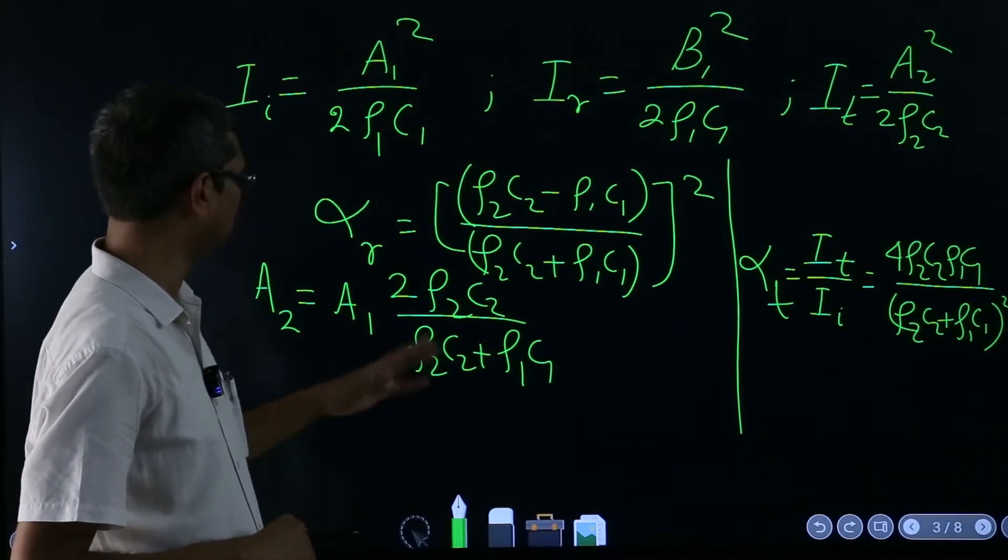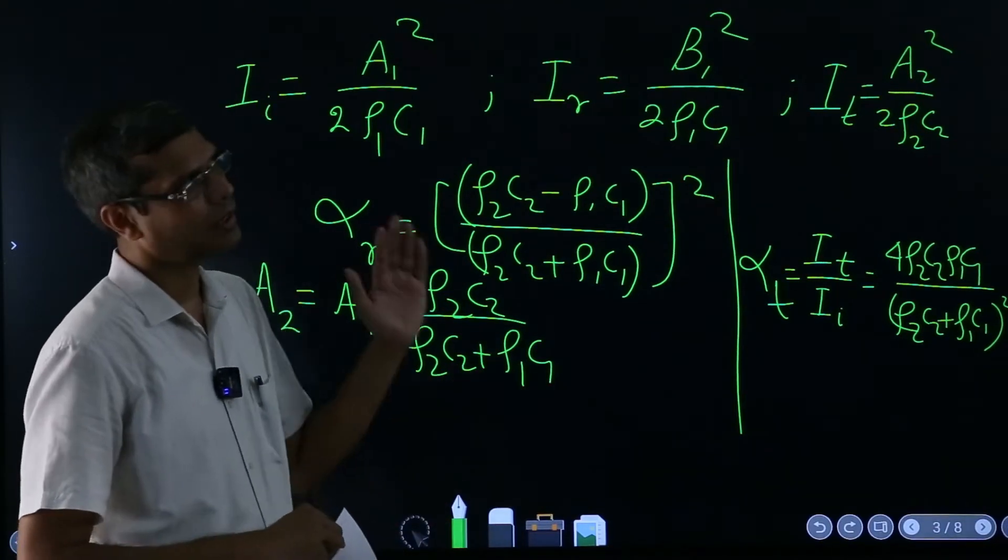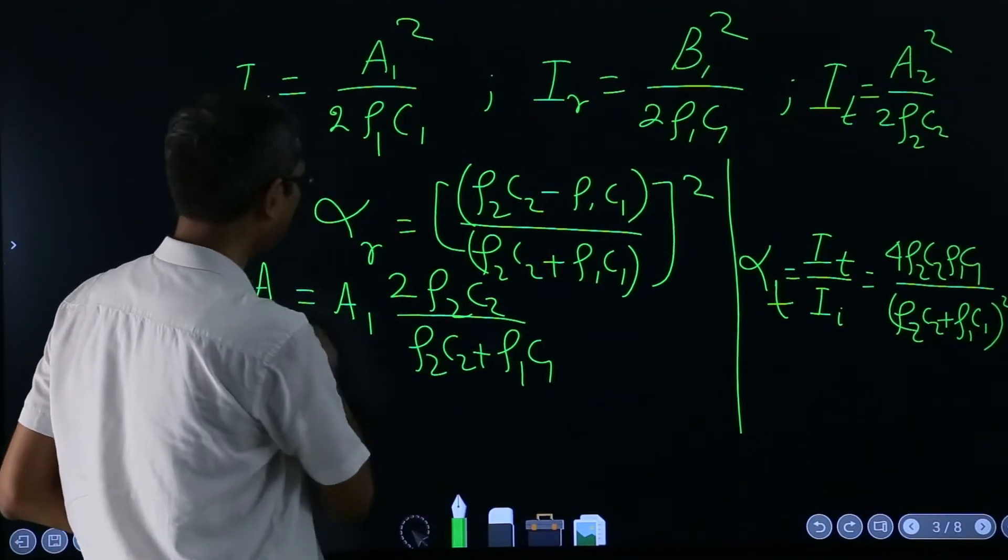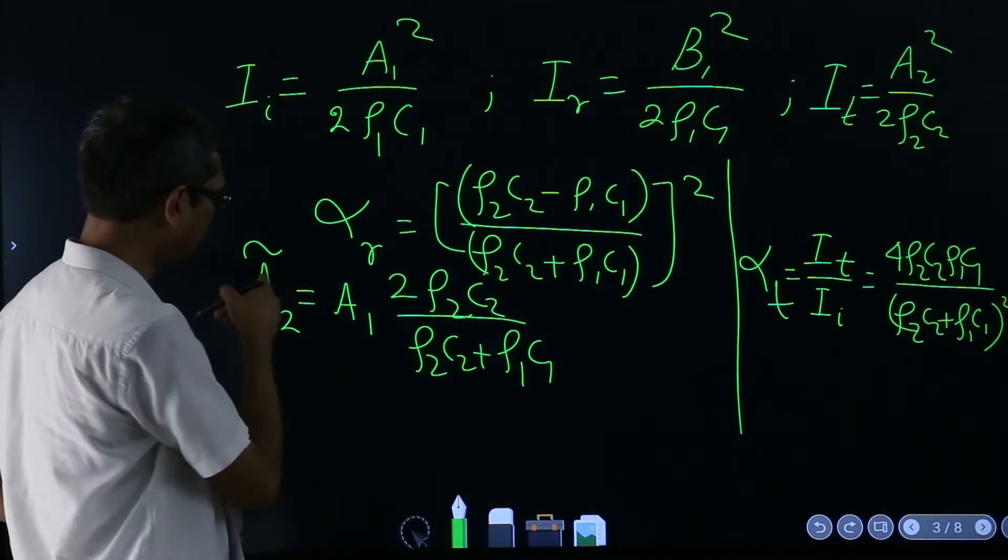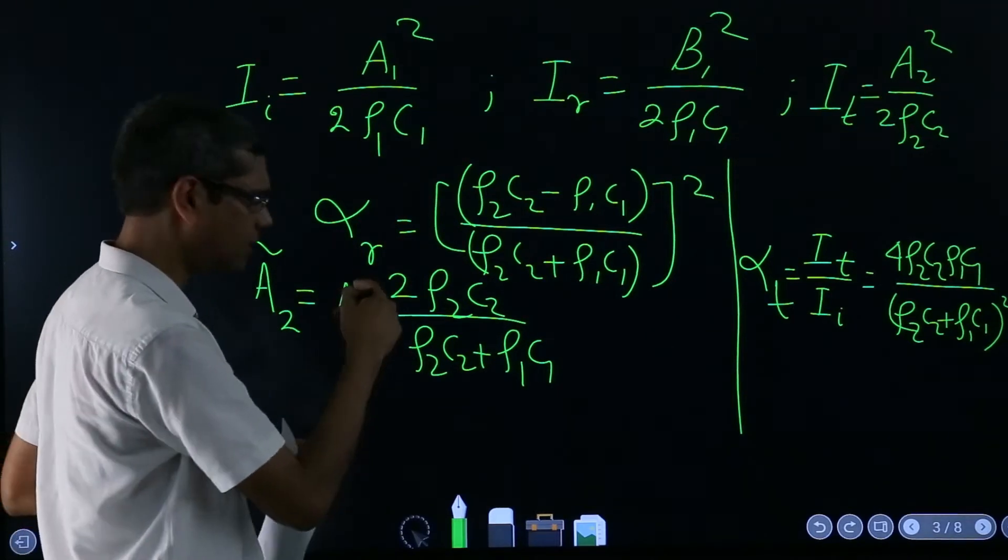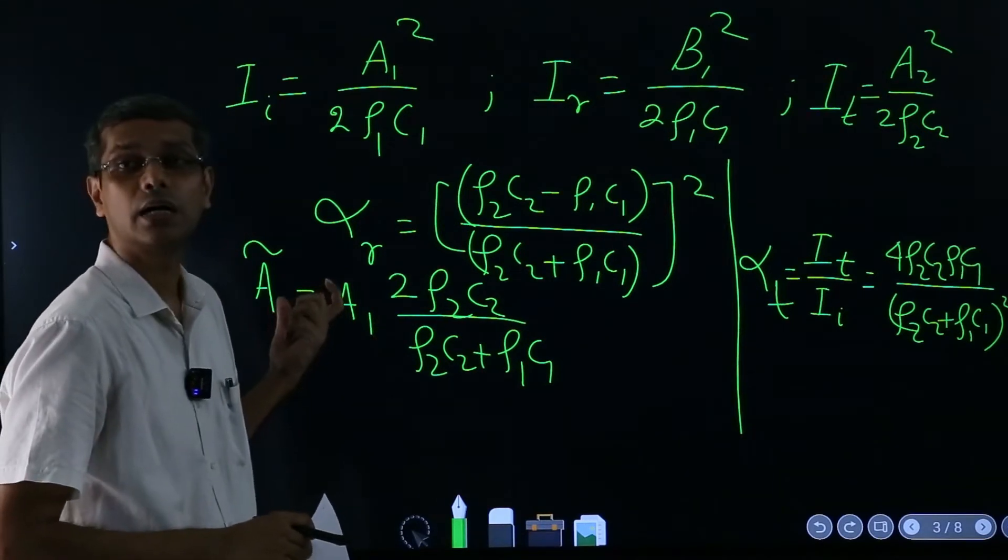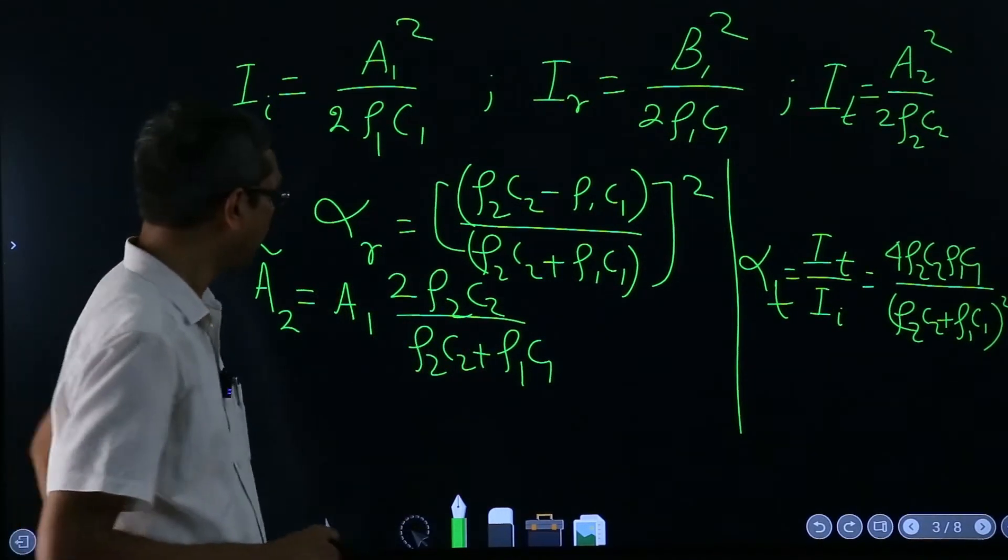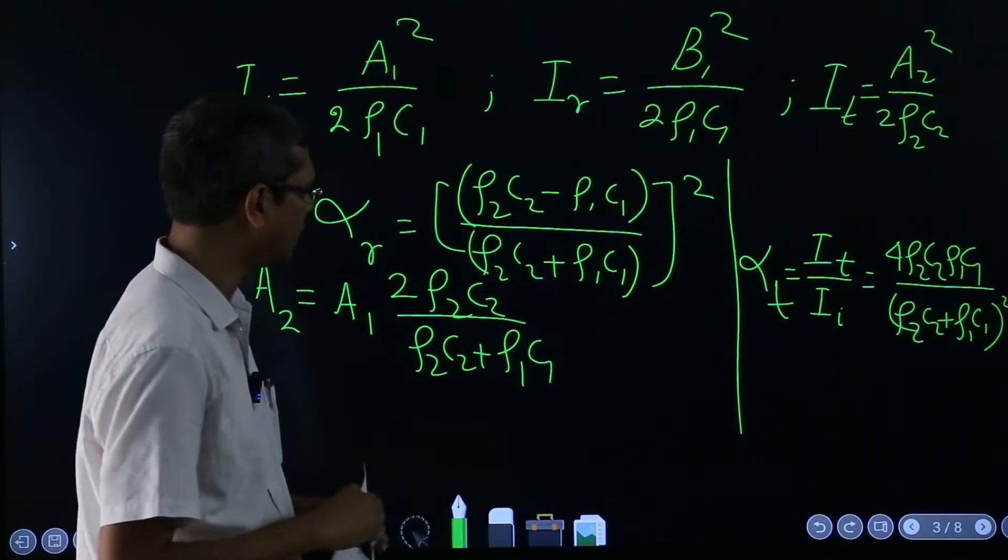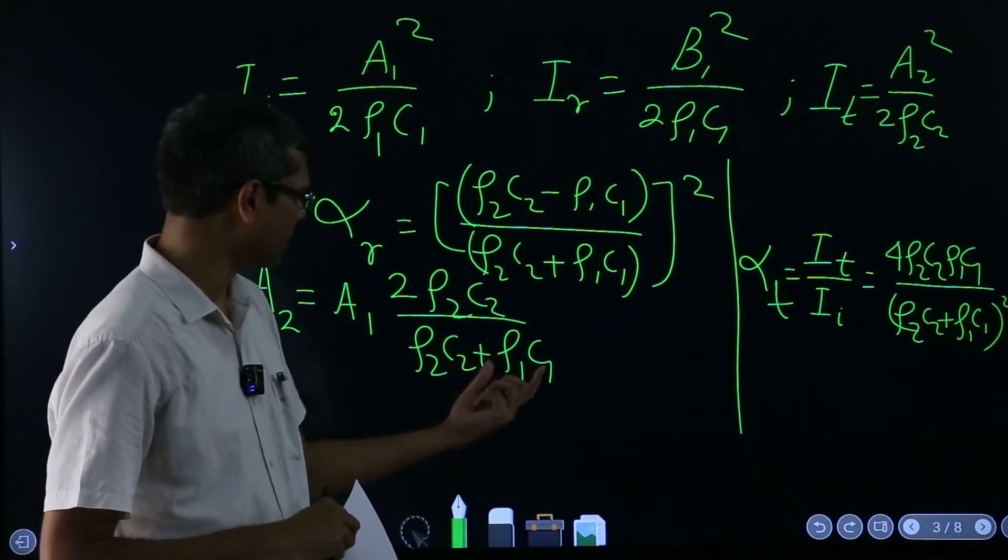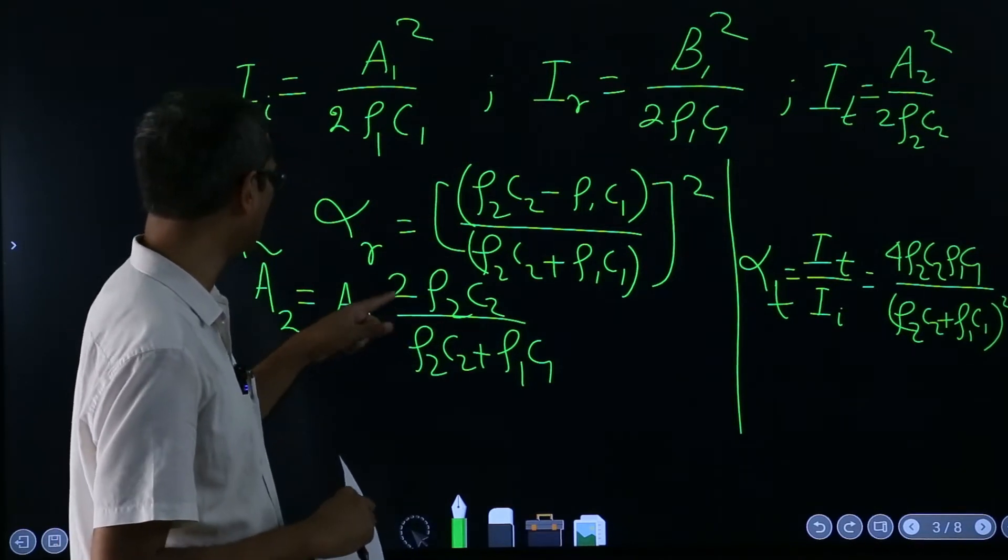Now, if you again consider the cases where suppose again air to water, now what this equation tells you is, the first thing is, again this is real. Though we had started with complex, here again we are seeing that it is real, that means there is no phase again between the incident and the transmitted wave. And then suppose ρ₂c₂ is much much higher value than ρ₁c₁, so this can simply be neglected as compared to this in the denominator, so they will cancel out, so 2 times a₁.